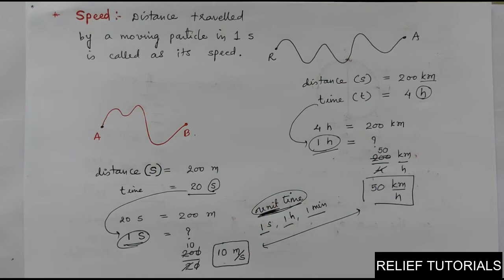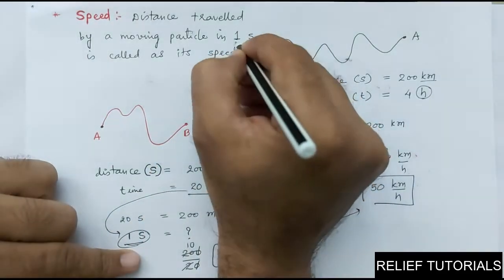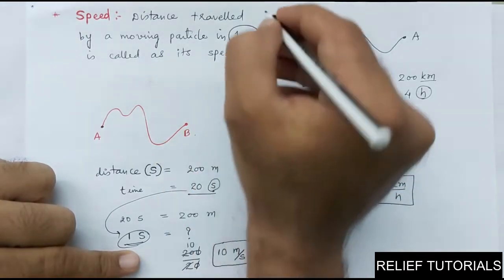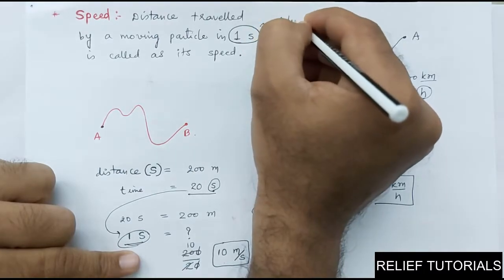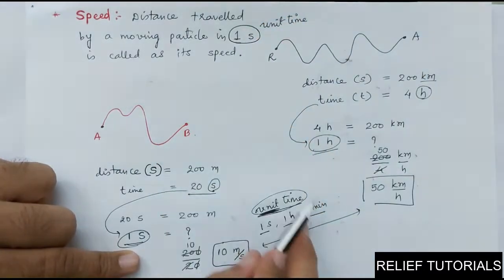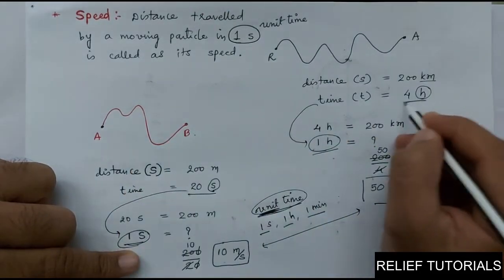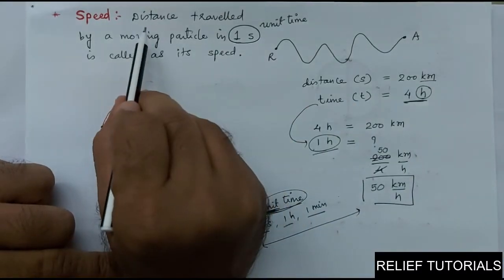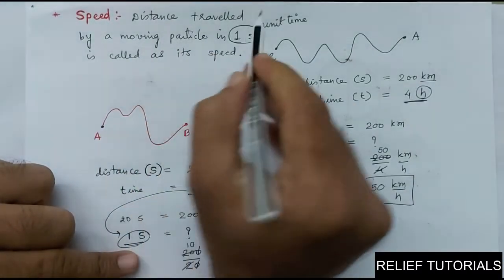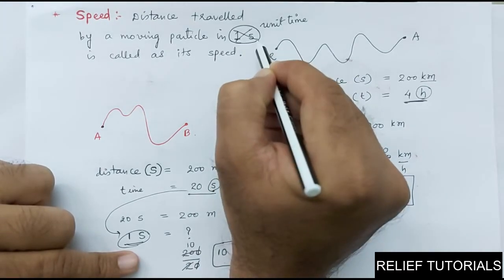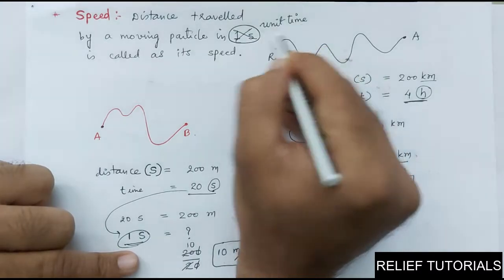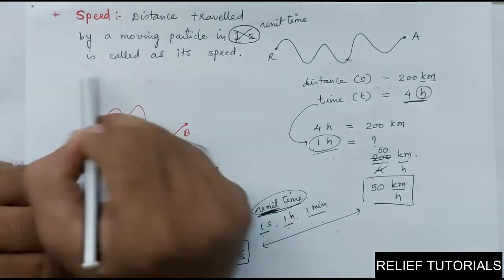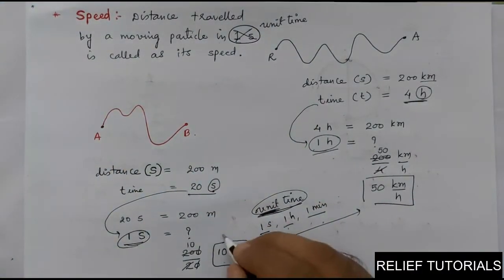Here I wrote 'one second' but I can replace that with 'unit time,' because in some examples the time may be in hours or minutes. To generalize: distance traveled by a moving particle in unit time is called its speed.